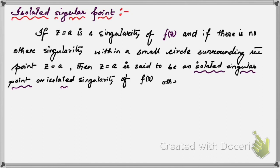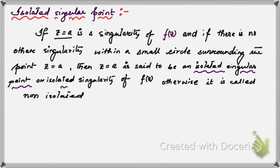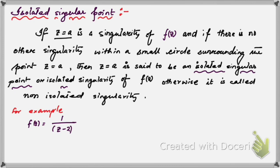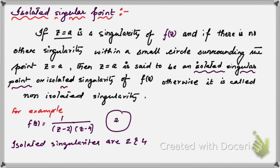If a point is not isolated, it is called a non-isolated singular point. For example, consider the function f(z) = 1/[(z-2)(z-4)]. In this case, the isolated singularities are z = 2 and z = 4, because at those points the denominator becomes zero and the function is not defined.